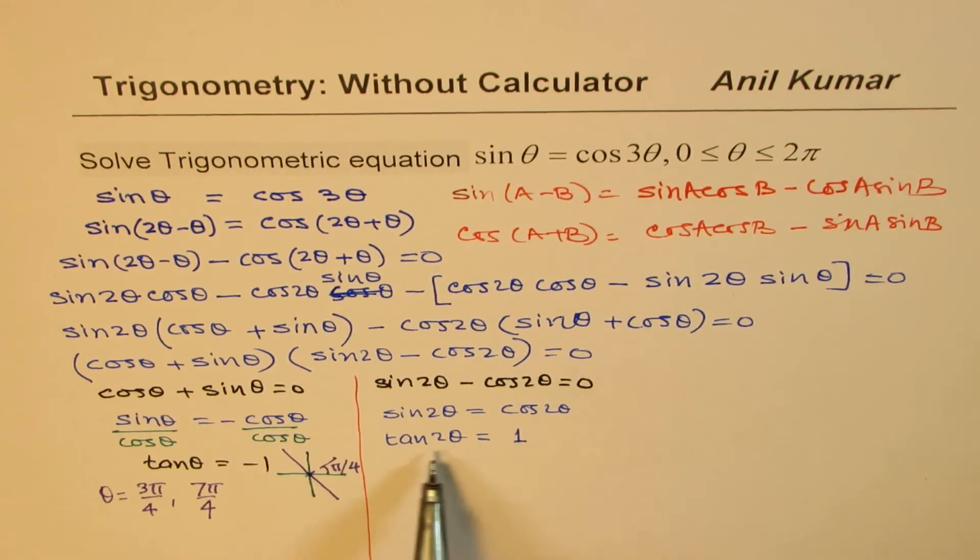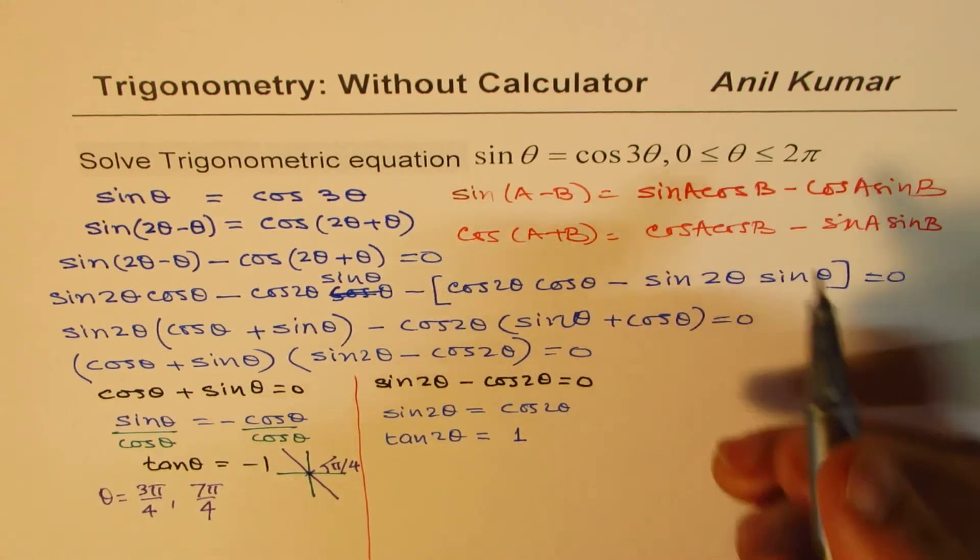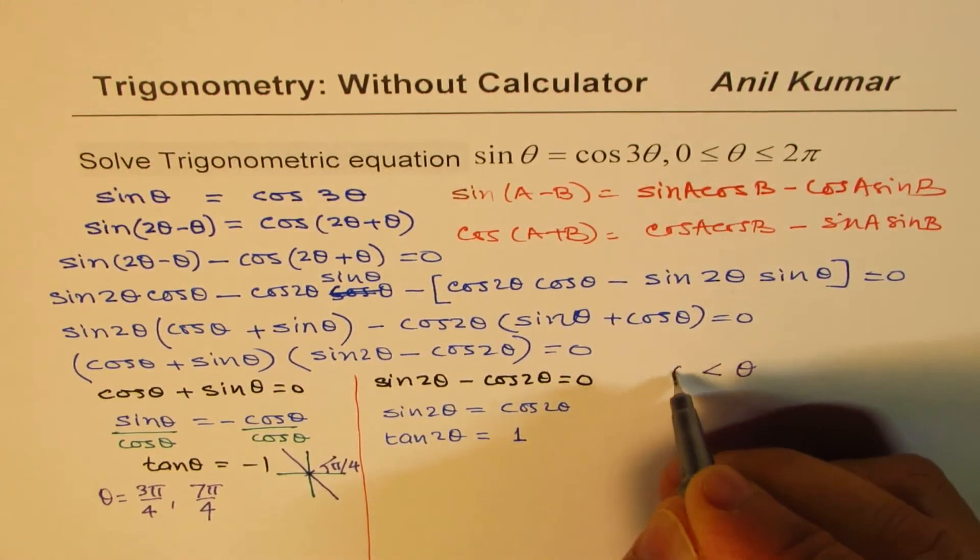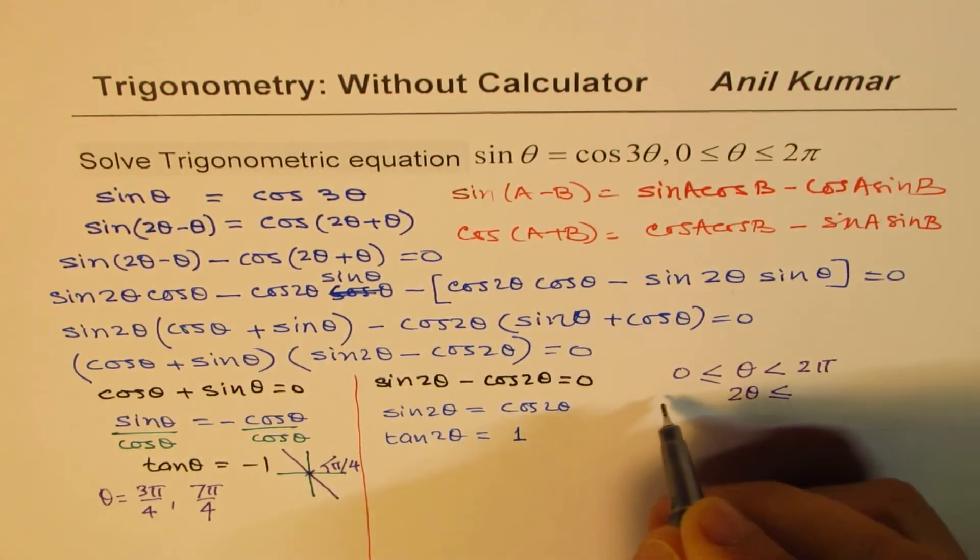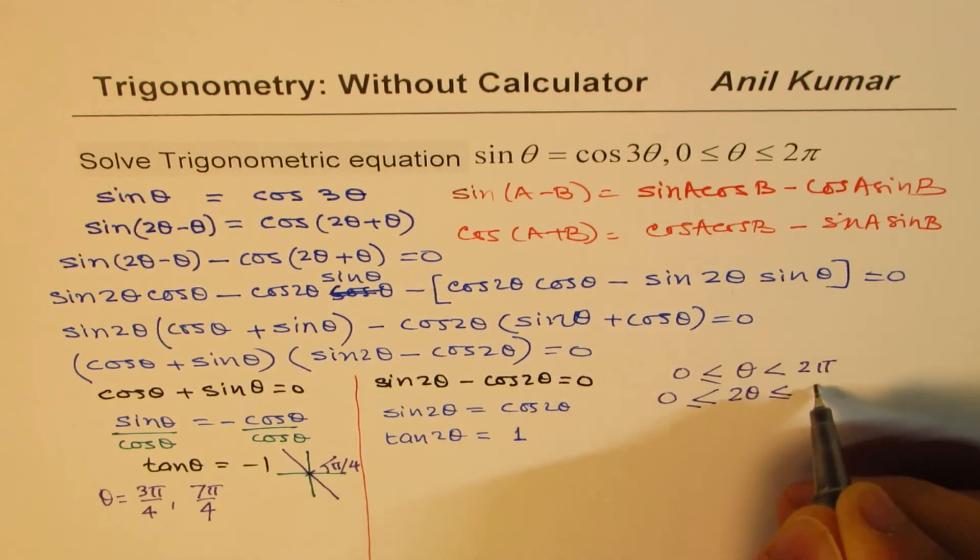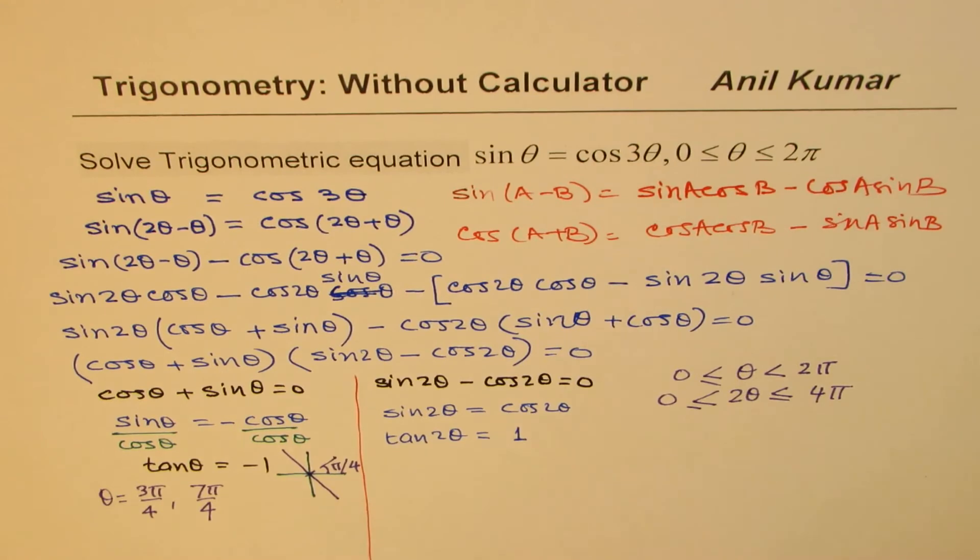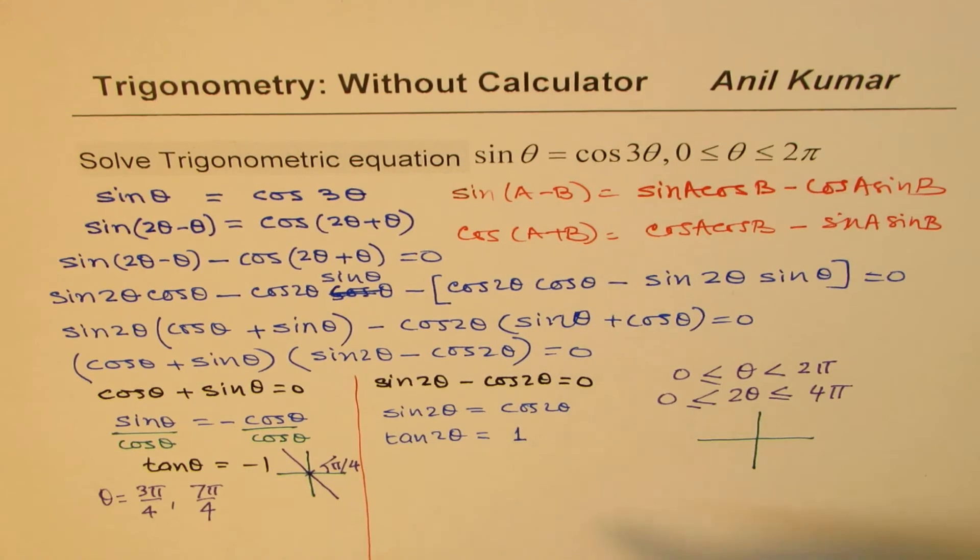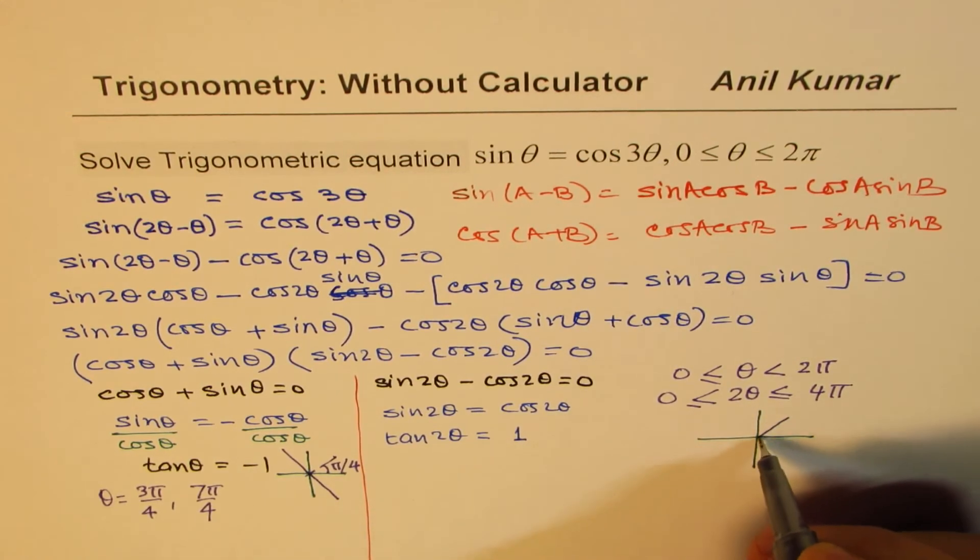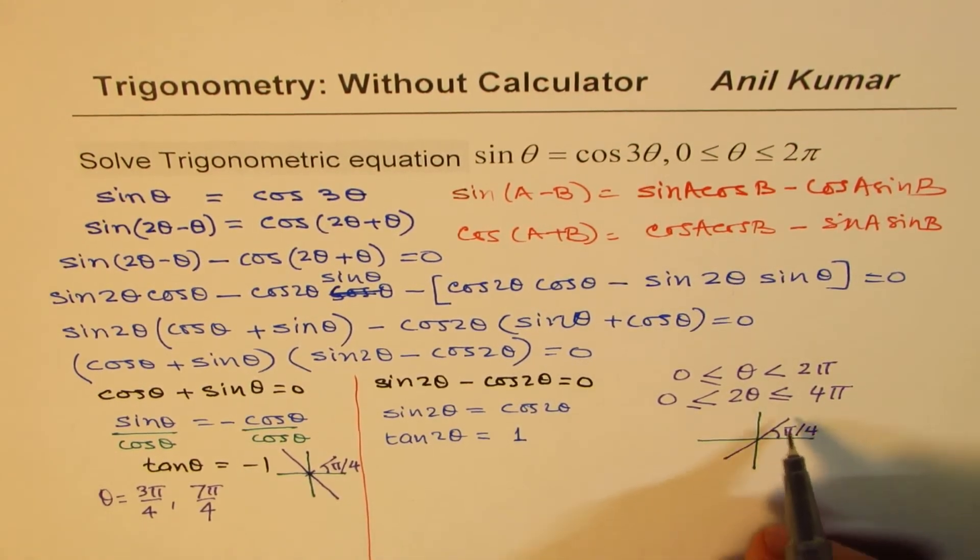Now for 2 theta, what do we get? What we know here is that theta is between 0 to 2 pi. So 2 theta should be between 0 to 4 pi. So in this particular case, we are looking for positive values. That means either we are in quadrant 1 or in quadrant 3, the acute angle being pi by 4.